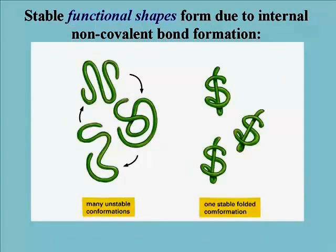Given the huge number of hydrogen bonds or other non-covalent interactions within and between large macromolecules, it really shouldn't come as a surprise that there are alternate possible interactions and alternate ways of folding a molecule, and therefore isomeric shapes that could form. The cartoon here illustrates the concept of one more stable shape, or set of non-covalent interactions, accumulating in a cell or in a test tube, among many less stable ones that fold or unfold due to thermal motion.